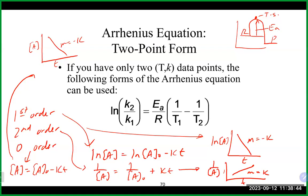At the top of the hill is the transition state, which contains the activated complex — a species with partially made and partially broken bonds as it converts to products. This type of energy diagram, where reactants are higher in energy than products, is exothermic — energy is given off as a result.